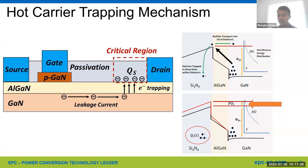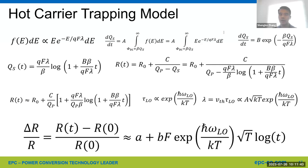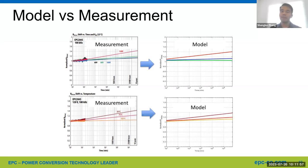Here are the equations we used to model this hot carrier trapping process. By combining everything together, it yielded a final dynamic RDS(on) equation that includes voltage, temperature, and time. Here shows a comparison of measurement and model for EPC2045 100-volt Generation 5 devices operated at four different voltages and three different temperatures. Good agreement between measurements and model was found, which demonstrates the validity of the model.